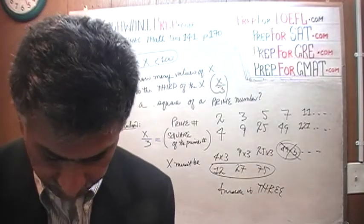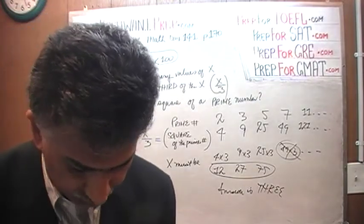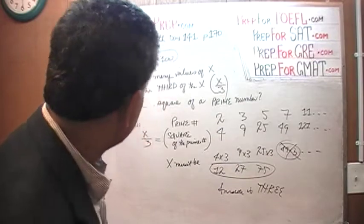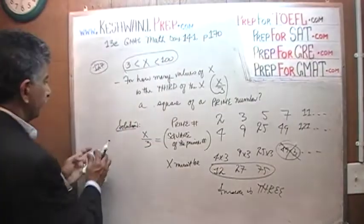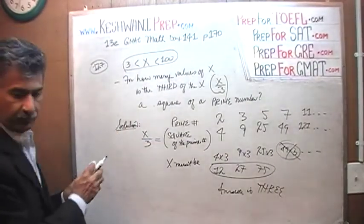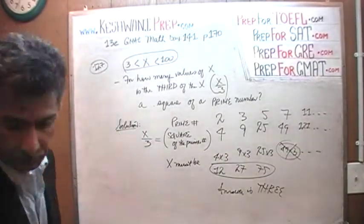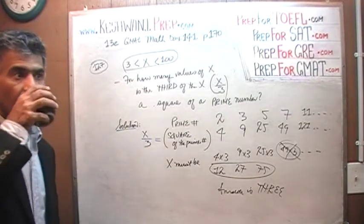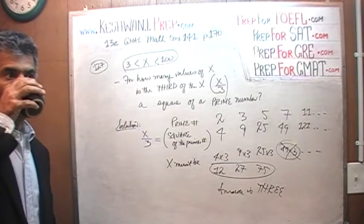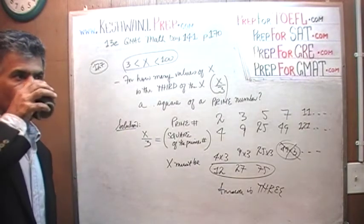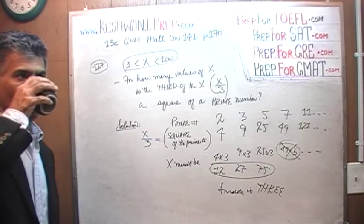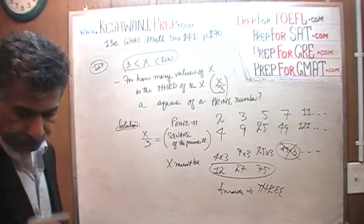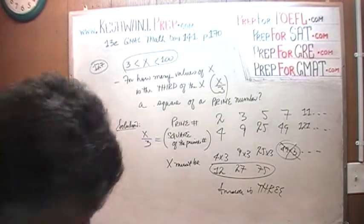There are 3 such numbers where, if you take a third of that number, it turns out to be a square of a prime number. That's all. I told you — it's a very simple problem, you just have to understand the wording. Number 128, the next one — we are done with this one.